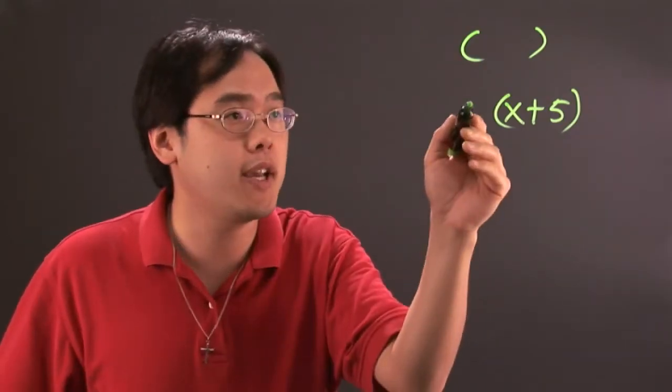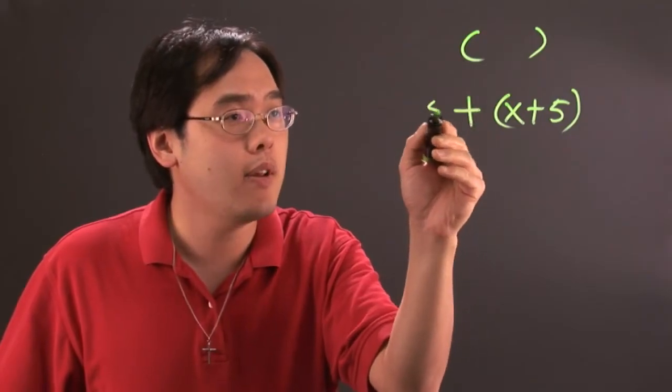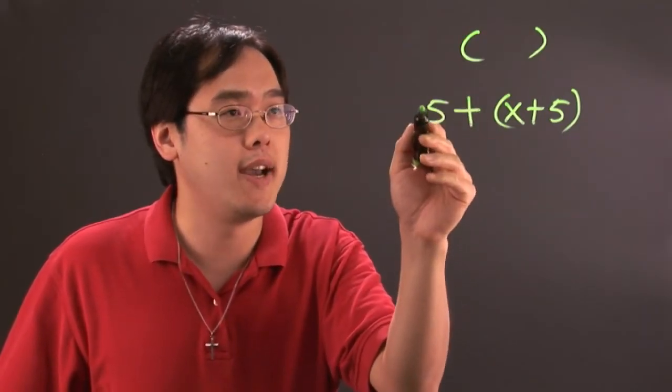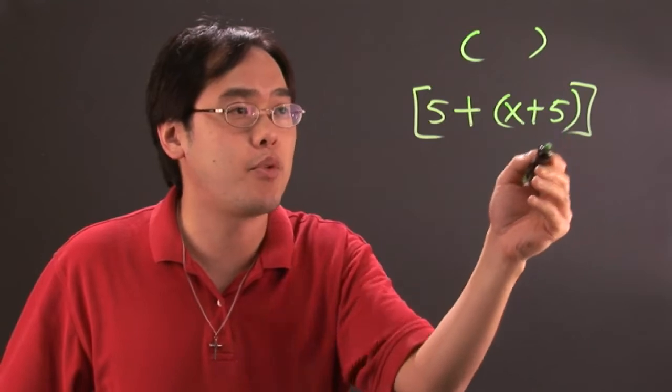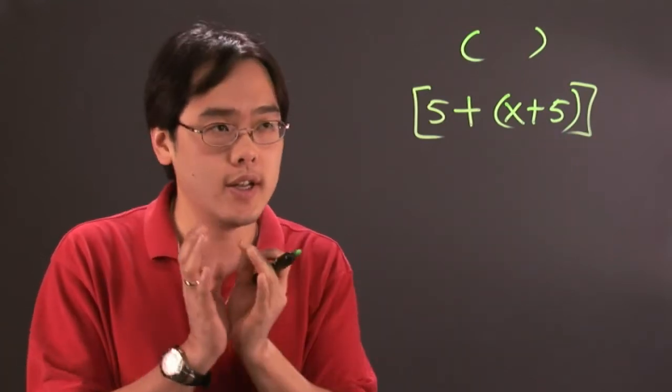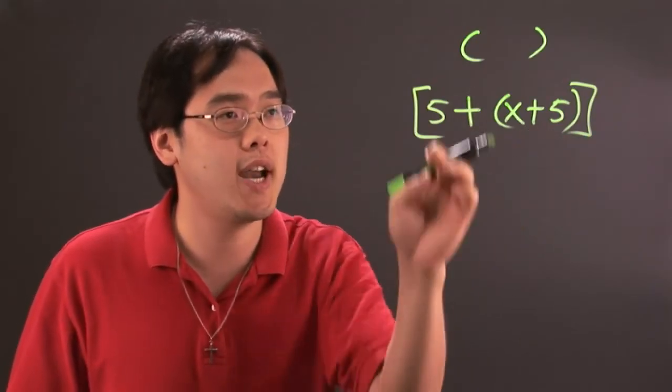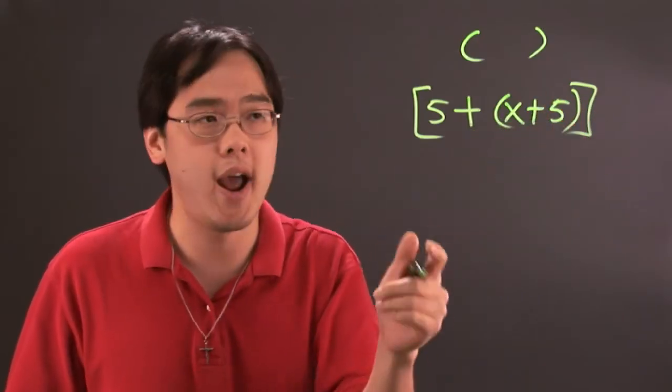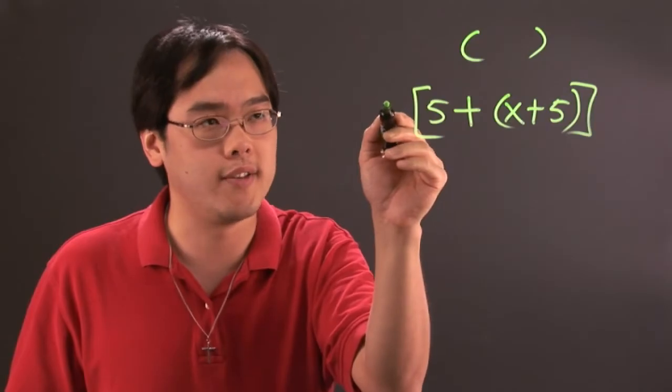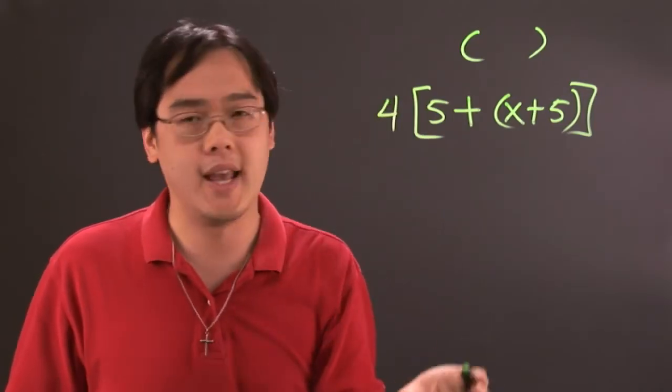For example, if you have something like 5 plus x plus 5, you can put brackets around it to let the reader know that, okay, I have two sets of symbols I've got to work with. The inside symbols are x plus 5 and the outside symbols are in the brackets. And then you can put a 4 on the outside.